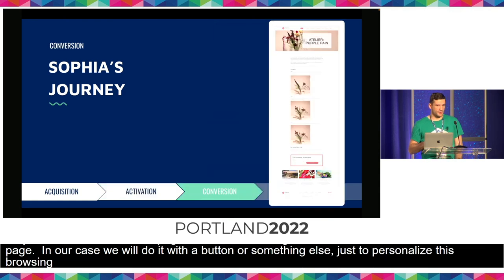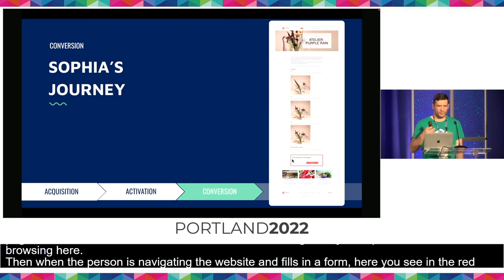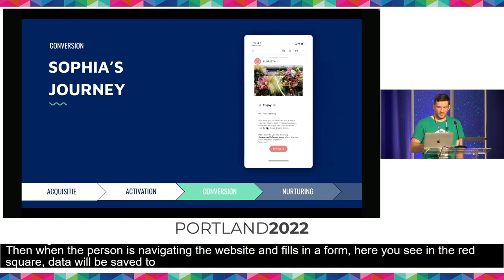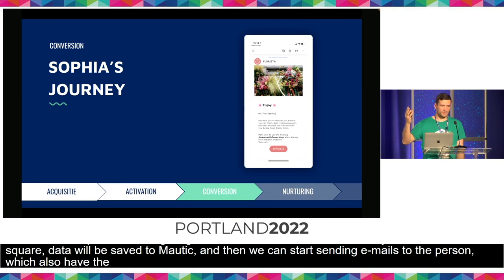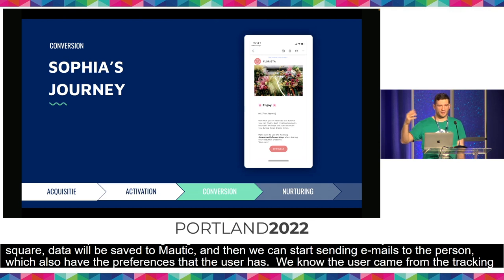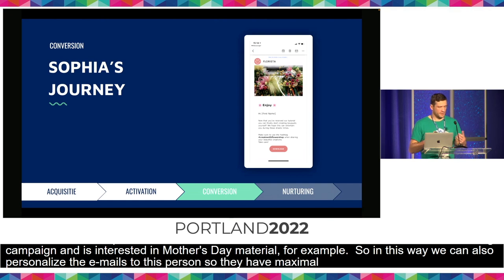When the person is navigating the website and fills in a form, data will be saved to Mautic, and then we can start sending emails to the person which also have the preferences that the user has. We know that the person came from the UTM tracking campaign and is interested in Mother's Day material. This way we can also personalize the emails to this person so that they have a maximal feeling that they are getting real relevant content.